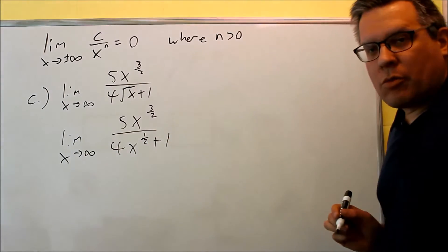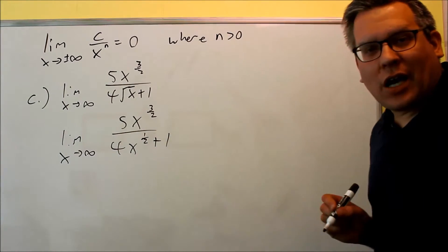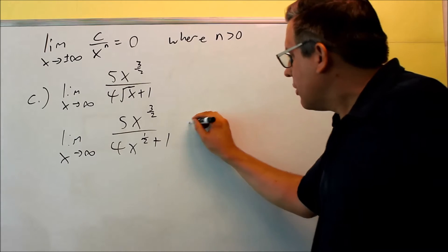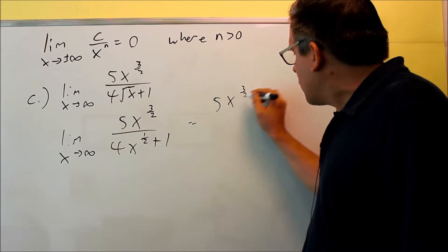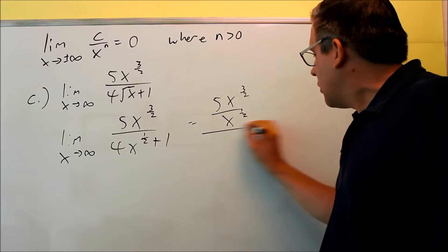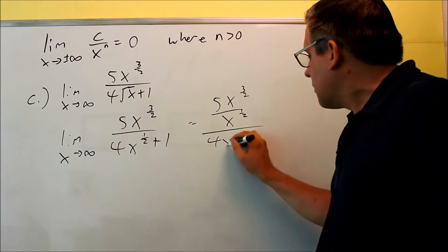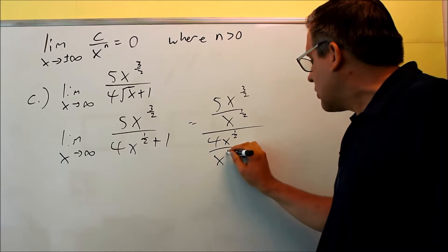Okay, then next, what I'm going to do is divide everything top and bottom by the highest power in the denominator. 5x to the 3 halves over x to the 1 half. Everything down here, I'm going to divide it by x to the 1 half.